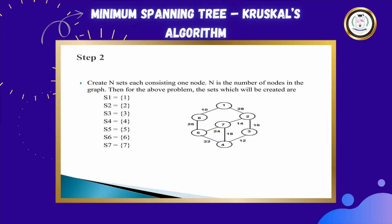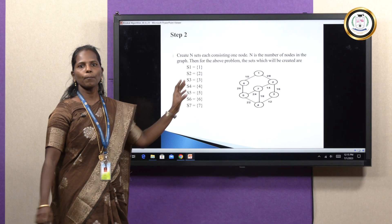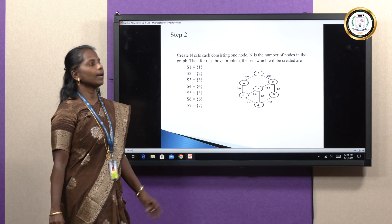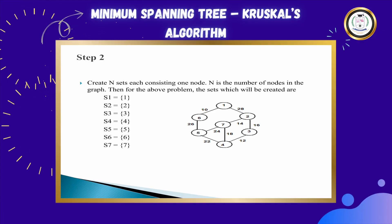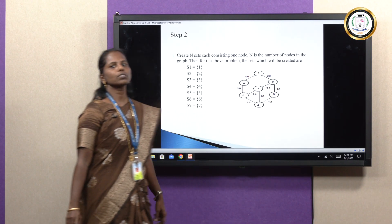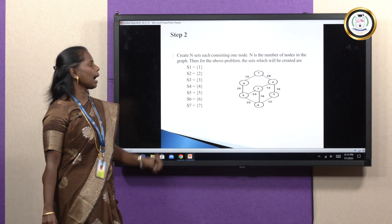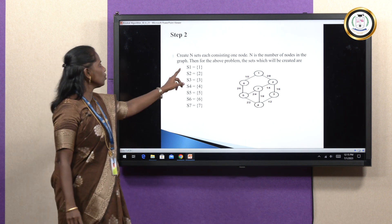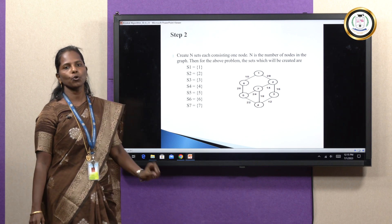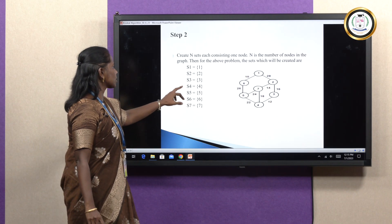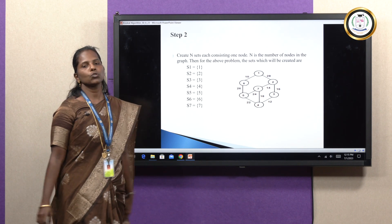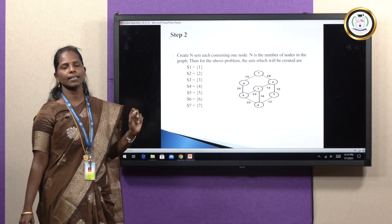The next step is we have to create sets. The number of sets depends on the number of nodes. In our network, we are having totally 7 nodes: 1, 2, 3, 4, 5, 6, 7. Since we are having 7 nodes, I have to create 7 sets. The values in each set initially will be the node value — S1 contains node 1, S2 contains node 2, and so on up to S7. The second step is creating N sets.